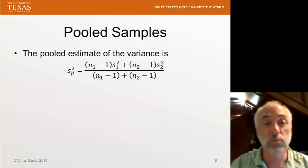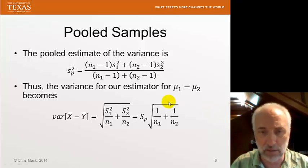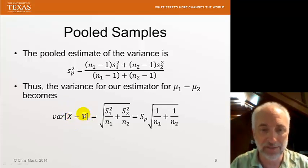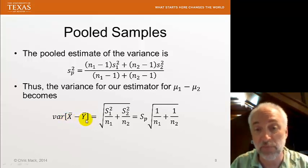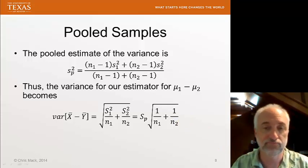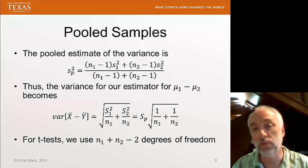So, using the pooled samples, we have this pooled estimate of the variance. The variance of our estimator becomes this. Actually, this should be x1 minus x2 bar rather than x minus y. But, the variance of the difference of the two means of my two samples is simply now my pooled sample standard deviation times the square root of 1 over n1 plus 1 over n2. And again, for t-tests, we will use degrees of freedom of the total numbers in both samples minus 2.